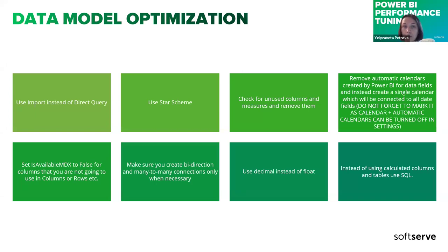The last recommendation for data model optimization is to use SQL instead of calculated columns and tables. SQL helps us in the best possible way. If you want to calculate something that shouldn't be recalculated during filtering — like a normal sum — you can always replace it with SQL, and it will work better. Power BI won't need extra time to calculate data when showing visualizations.